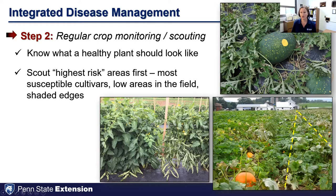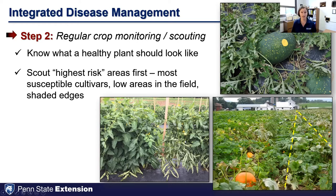In this picture of a pumpkin field with two different cultivars, the one on the right is much more susceptible to powdery mildew than the one on the left. Scouting those most susceptible areas first for the diseases you're most likely to encounter is recommended. It's also important to know how different cultivars respond to environmental conditions — for example, two tomato cultivars experiencing heat stress, where one shows physiological leaf curl that doesn't lead to yield reduction.